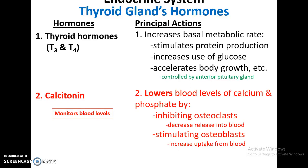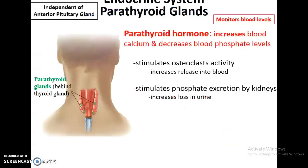The thyroid gland also secretes calcitonin, which is released when calcium levels in the bloodstream get too high. It will lower blood levels of calcium and phosphate by inhibiting osteoclasts that break down bone tissue to release calcium, and stimulates osteoblasts, which build up bone tissue and take in calcium from the bloodstream.